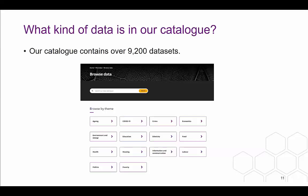The Find Data tab on the homepage has a section where you can browse and access data. By clicking through, you will come to the Browse by Theme page. We hold data on a number of topics such as ageing, COVID-19, crime, economics, environment and energy, education, ethnicity, food, health, housing, information and communication, labour, politics and poverty. You can also browse by data type, which we will cover over the next few slides.